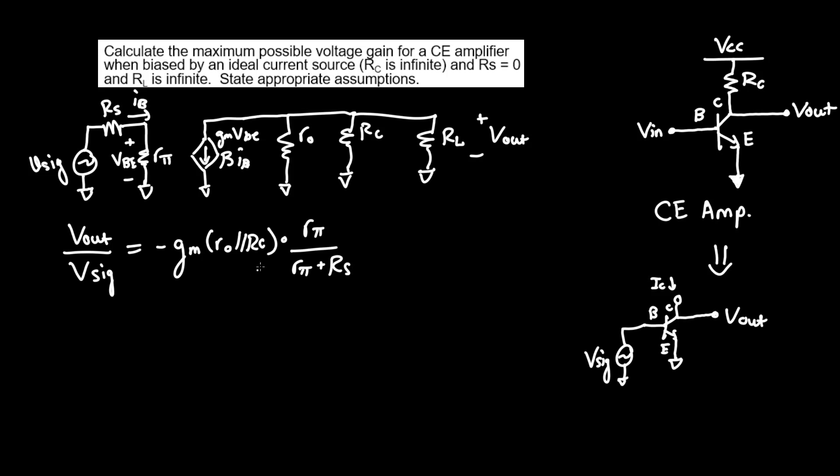So if it's in parallel with RC, and we're given that RC is infinite, RO in reality is actually in parallel with infinity. And, as it turns out, you will neglect the infinity after a basic mathematical operation. So now we know that it's actually negative GM, RO, times RPi over RPi plus RS. Again, as I said, we're taking the actual voltage across RPi VBE. So if we need this voltage here, we're going to have to do voltage division relative to RS. And we know that this is actually the voltage being amplified.